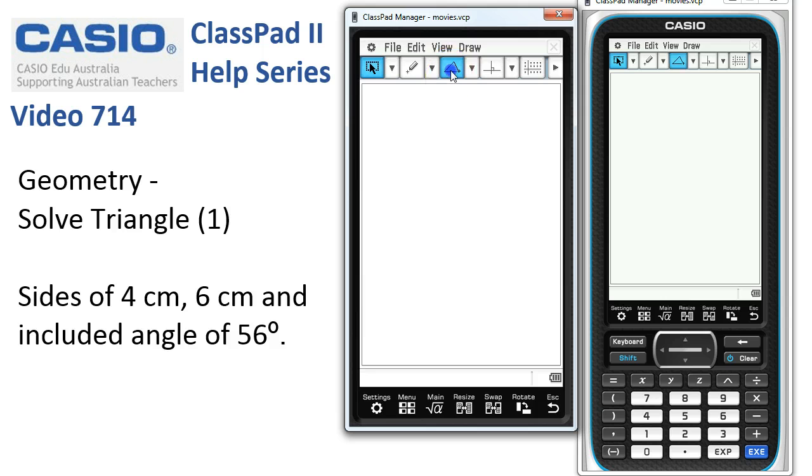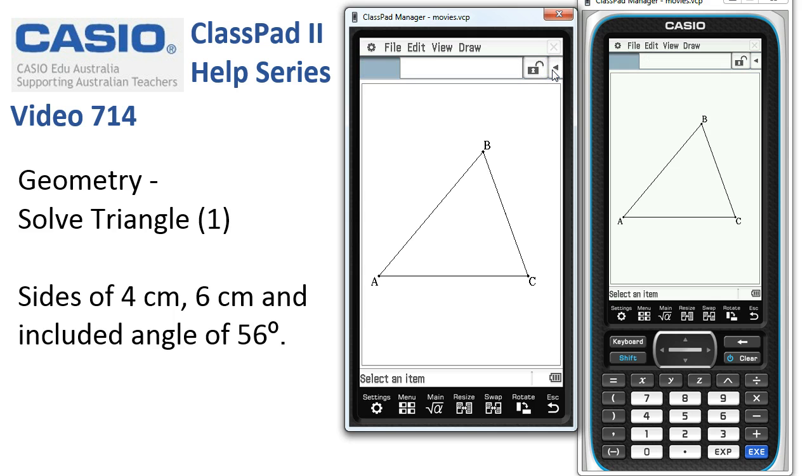We'll choose the triangle icon and draw ourselves a box to contain our triangle. When I release, a triangle appears. We'll head off to the Measurement Toolbar and start by...